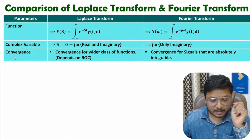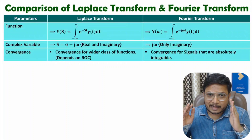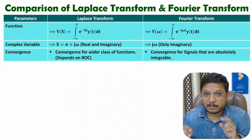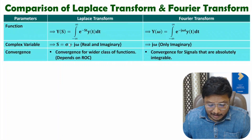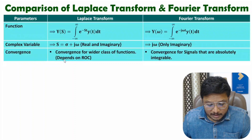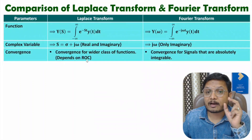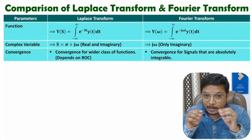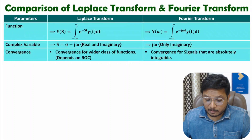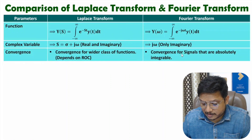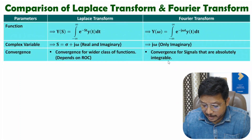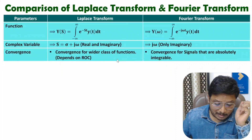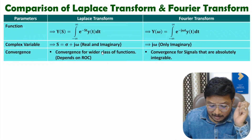When you talk about convergence of a signal, Laplace transform can converge for a wide range of functions. The reason is that Laplace transform has both real and imaginary components and has dependency on the ROC — Region of Convergence. While Fourier transform convergence exists for limited signals only — those that are absolutely integrable. So if a signal is absolutely integrable, then only can one identify its Fourier transform, whereas Laplace transform can be identified for a wide range of functions.